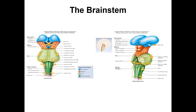Here's the brainstem — there's the thalamus, midbrain, pons, medulla oblongata, and all your cranial nerves 1 through 12. You also have the superior colliculi and inferior colliculi — one handles vision and speech, and one handles hearing.